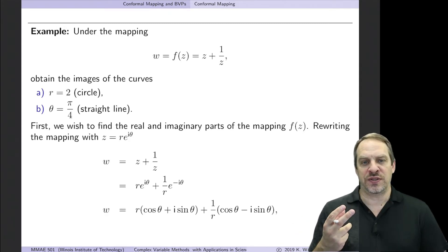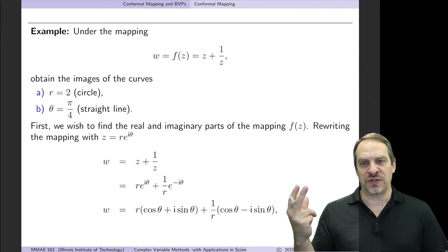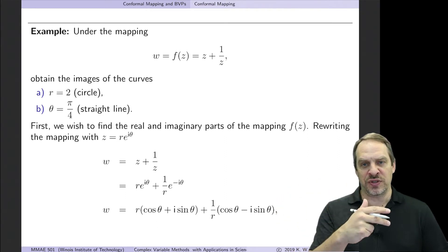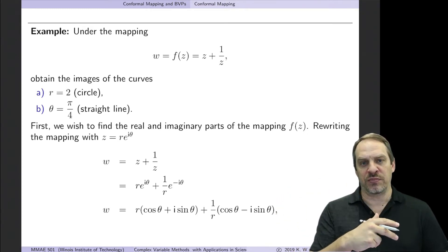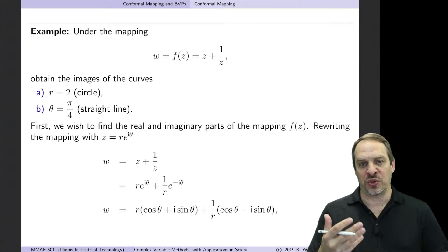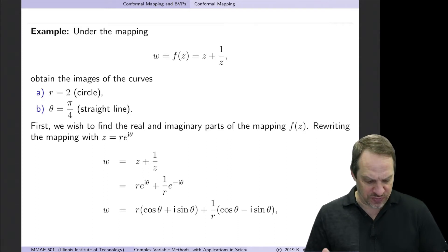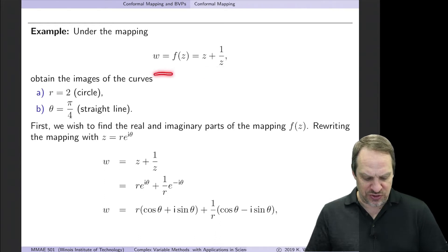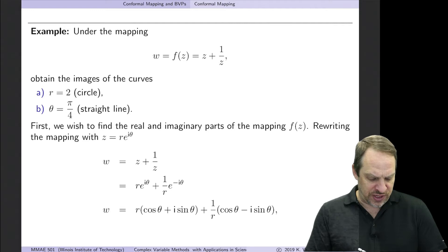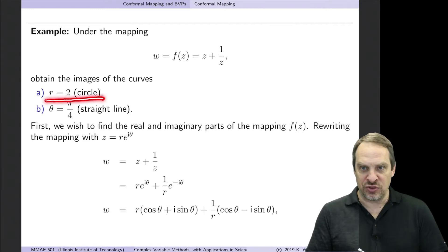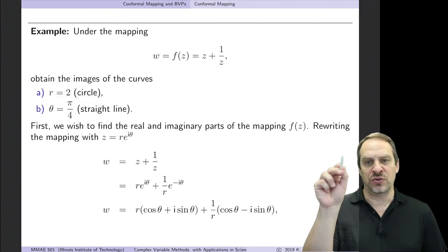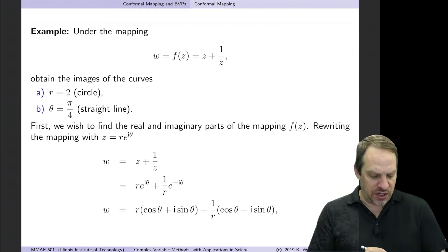Let's take a look at an example where we're going to take two curves in the z-plane and determine their images in the w-plane, checking along the way whether the mapping is one-to-one. The mapping is w = f(z) = z + 1/z. The two curves are r = 2, a circle of radius two centered at the origin, and θ = π/4, a straight line that bisects the first and third quadrants.